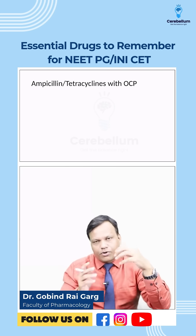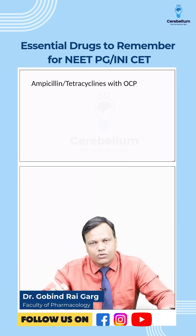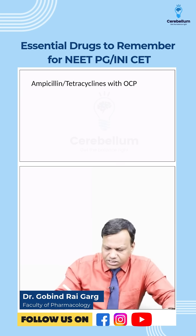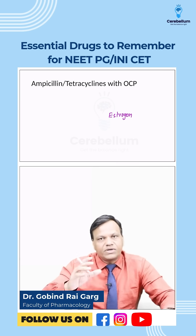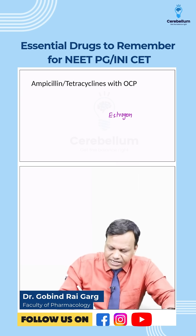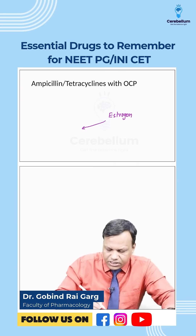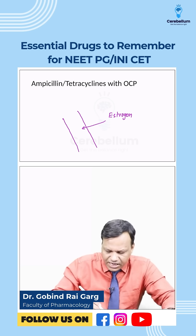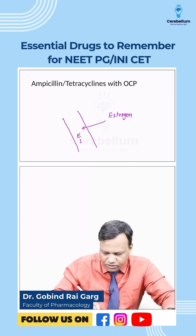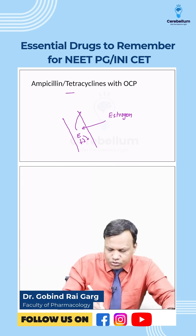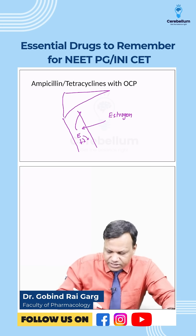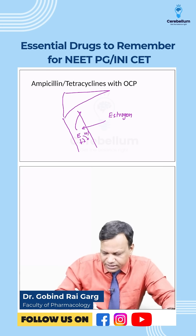An important interaction exists between broad-spectrum antibiotics and oral contraceptive pills (OCPs). Estrogen, present in oral contraceptives, is absorbed from the GIT into the blood. Some estrogen produces the desired systemic action and is retained, but the remainder goes to the liver — approximately 10% is utilized systemically and 90% goes to the liver.